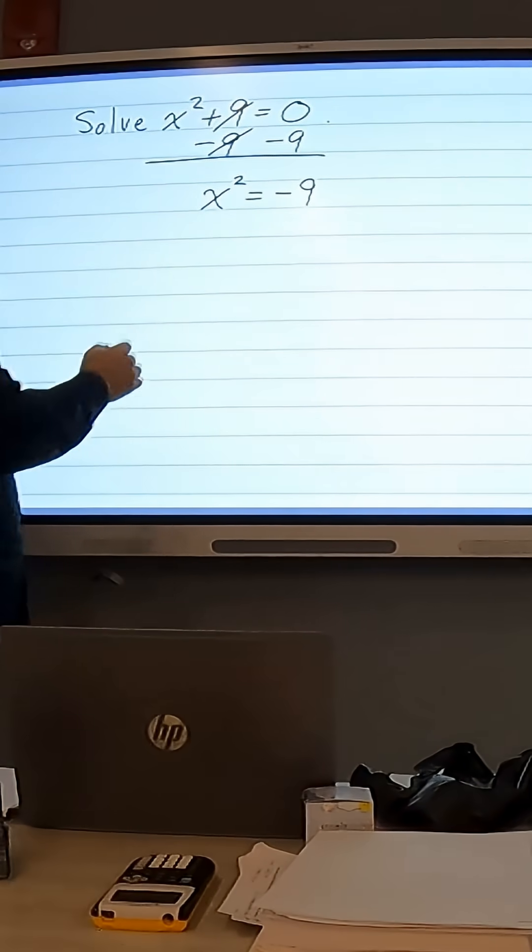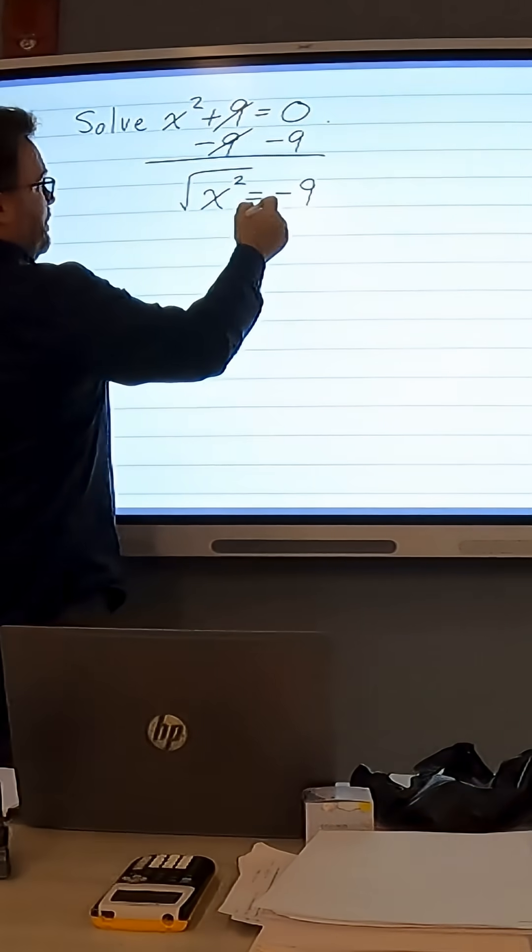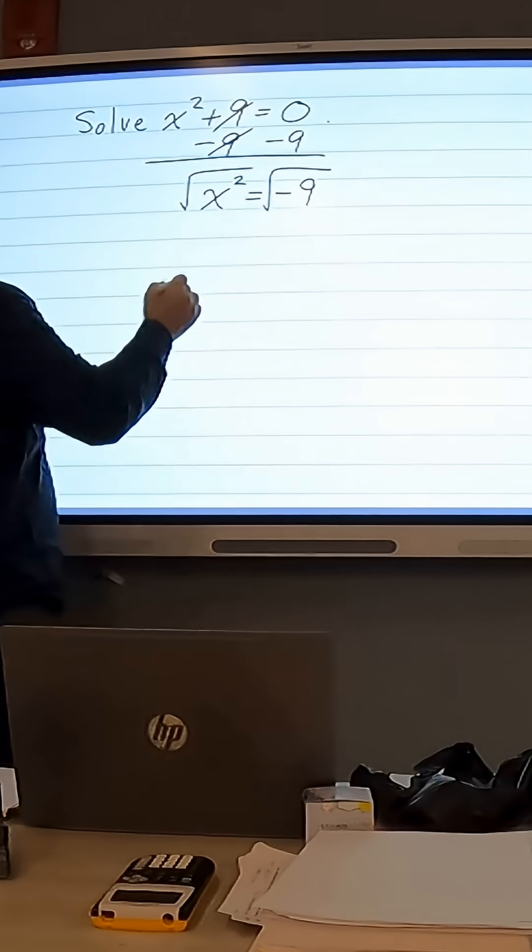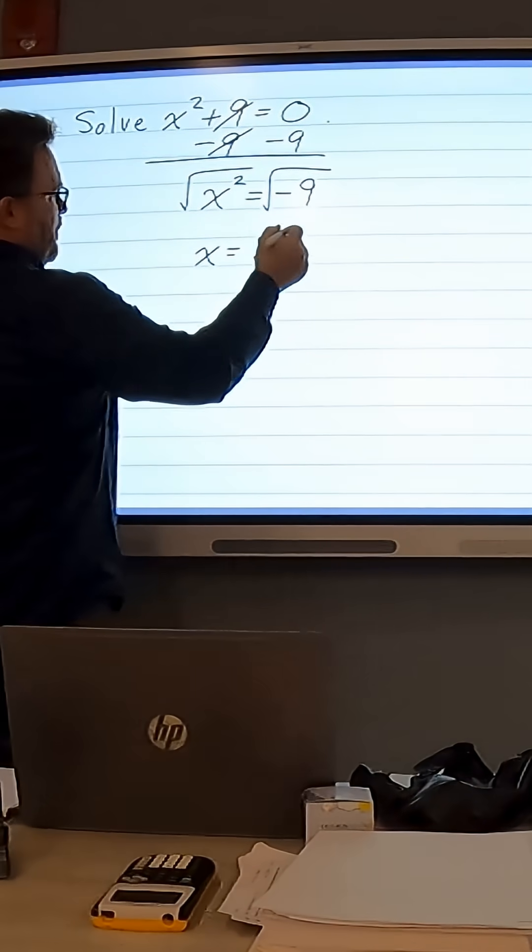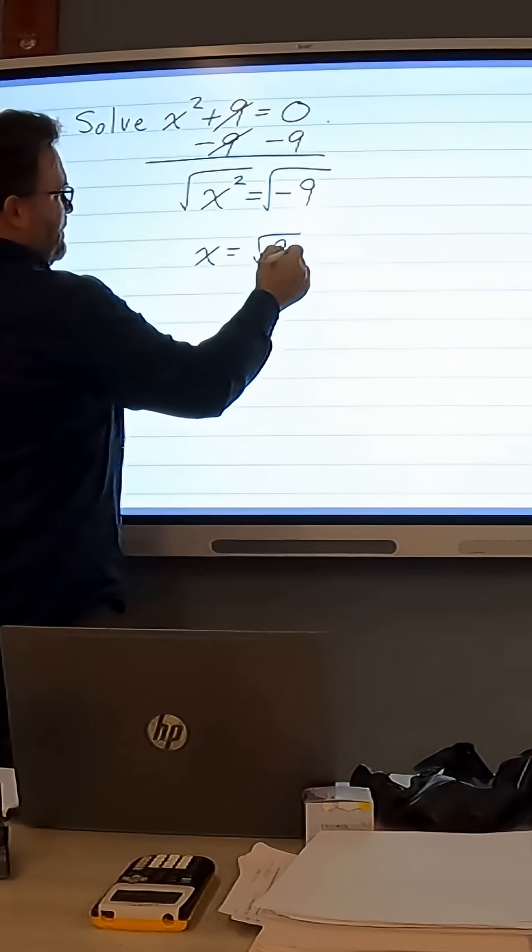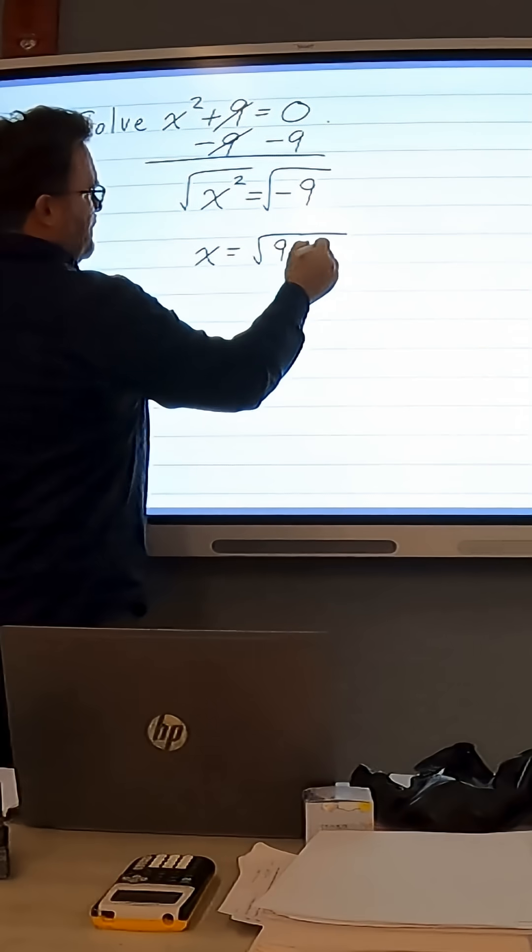What I'm going to do now is take the square root of both sides. So I'm going to get x equals, and I'm going to break this up, because we're really taking the square root of 9 times negative 1.